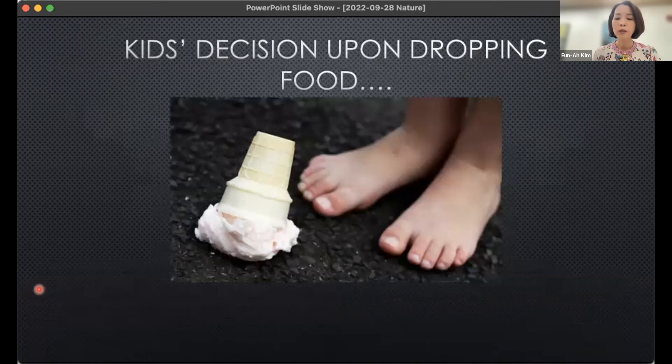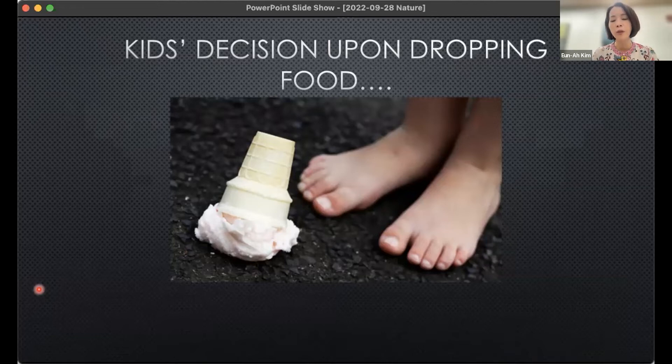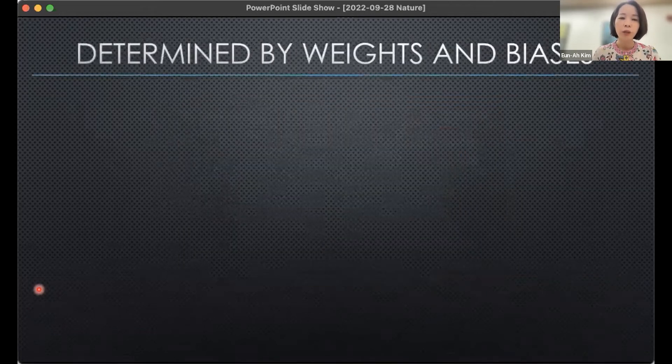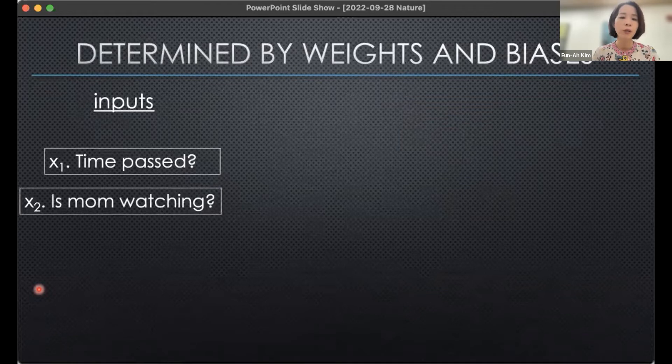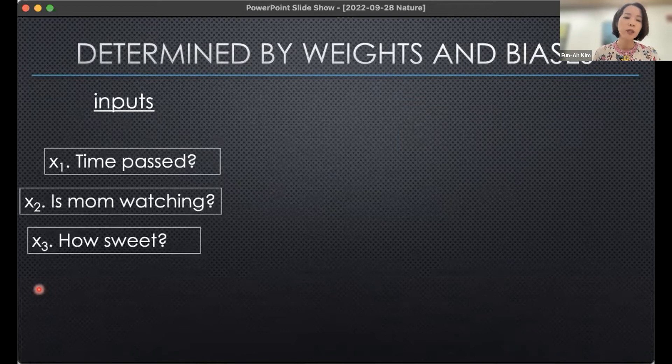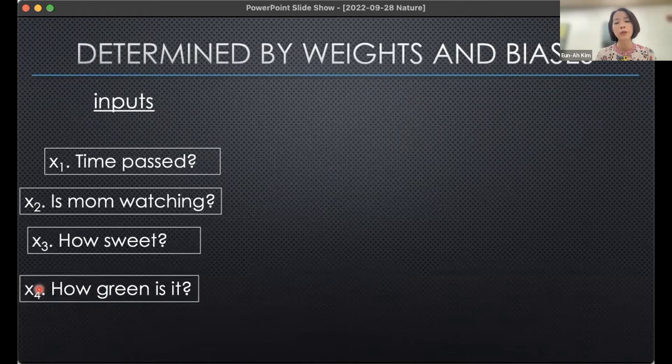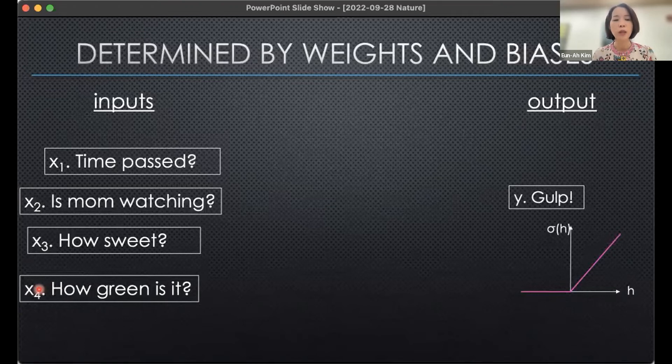We approach this problem as discriminating among different hypotheses, similar to discriminating among different numbers in handwritten digit recognition or any other image recognition problem. How does supervised learning work? To think about supervised learning, I first thought about training kids. This poor kid has to make a decision upon dropping precious ice cream. When kids drop food, they take input such as how long it has been since the food dropped, whether your mother or father, the bad cop parent, is watching, how sweet it is - for my kids, how green is it is also an important question. You take this input and try to come up with an output. For the case of our data, we're trying to come up with an output of which hypothesis best describes my data given the input.